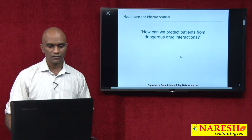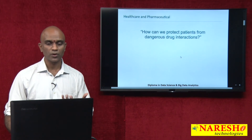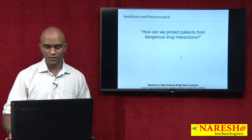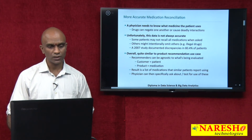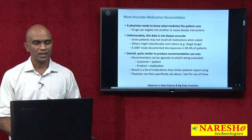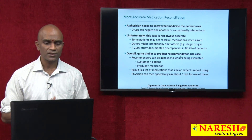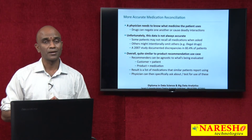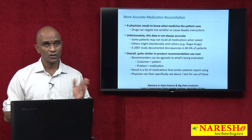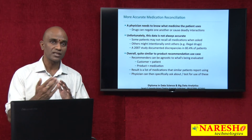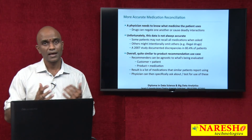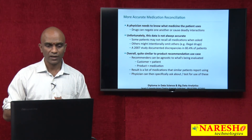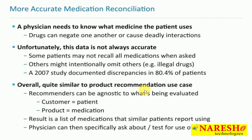Moving on to health and pharmaceutical — how can we predict and protect patients from dangerous drug interactions? This is about more accurate medication reconciliation. A physician needs to know what medicines the patient uses. Many times patients go to doctors with EMRs (electronic medical records) and some may not have them. If each physician does not know what the other physician has prescribed, drugs can negate one another or cause deadly interactions.